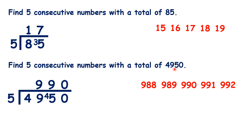This is a really great trick. All you need to do is ask someone to give you a multiple of 5 — you need a multiple of 5 so that you don't get a remainder and you have your middle number. Then, as long as you remember that you need to take away two to get your first number, you'll always be able to find five consecutive numbers which give that total.